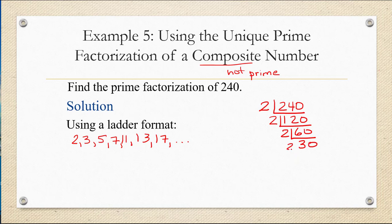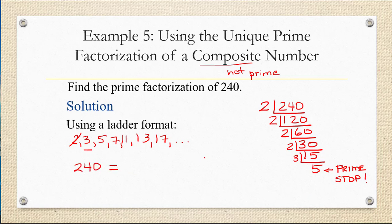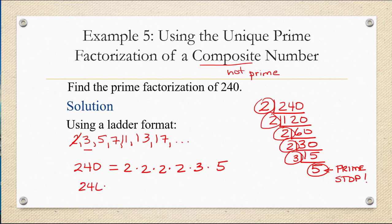2 goes into 60 thirty times. 2 goes into 30 fifteen times. Now 15 is not an even number — 2 will not go into 15. So we move on to the next prime number, 3, and see if that goes into 15 evenly, which it does. We divide 3 into 15, which gives us 5. Notice that we got another prime off our list — the number 5. When that happens, we stop. So 240 equals the product of all the prime factors we divided by, plus that number 5: 2 times 2 times 2 times 2 times 3 times 5. In exponential notation, that's 2 to the 4th times 3 times 5. This is the prime factorization of 240.